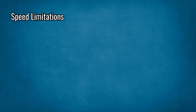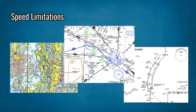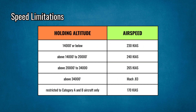Speed limitations. The expected holding speed for many charted holding patterns is published on the associated en route, terminal, or approach chart. In cases where speed is not specified, holding patterns must be entered and flown at or below the appropriate airspeed for the holding altitude. These speeds can vary from region to region, so pilots must be aware of the limitations in force for the area in which they are operating. International Civil Aviation Organization maximum holding speeds are listed in the table.